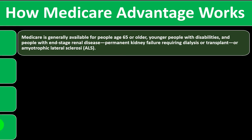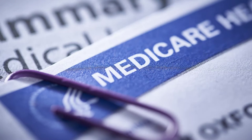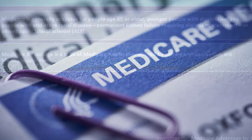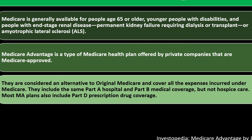How does Medicare Advantage work? Medicare is generally available for people age 65 or older, younger people with disabilities, and people with end-stage renal disease — permanent kidney failure requiring dialysis or transplant — or amyotrophic lateral sclerosis, otherwise known as ALS. Now we're focusing specifically on Medicare Advantage, which is a type of Medicare health plan offered by private companies that are Medicare-approved. They are considered an alternative to original Medicare and cover all the expenses incurred under Medicare.